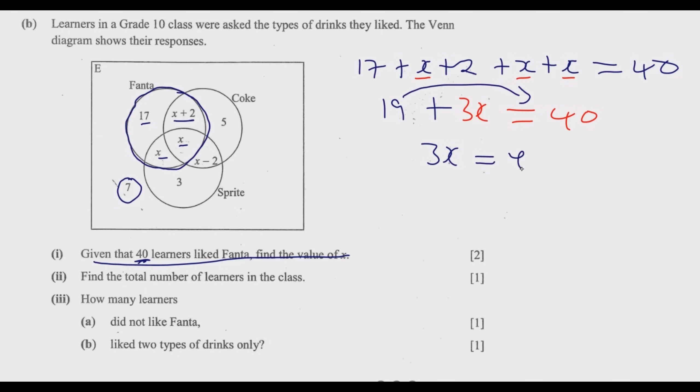So 3x = 40 - 19. So 3x = 21. Then we solve for x by dividing by 3 both sides. So x = 7. So x = 7 is the answer. Then we get these 2 marks.